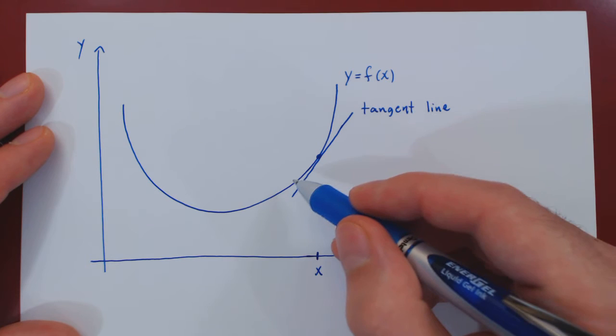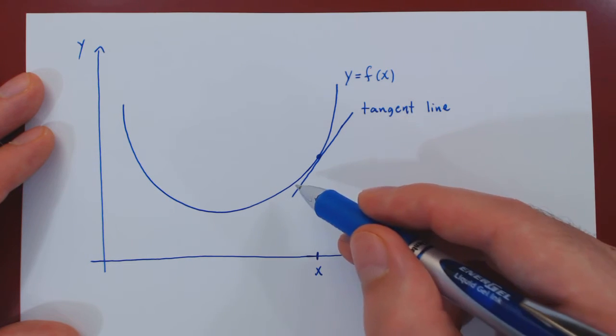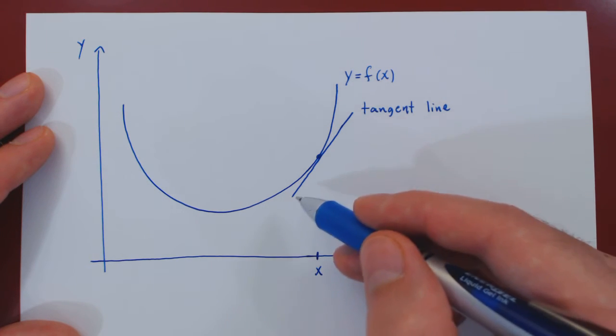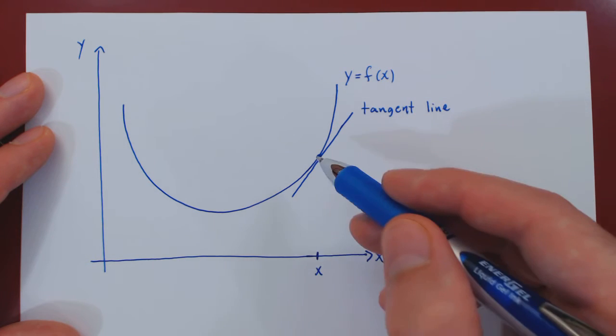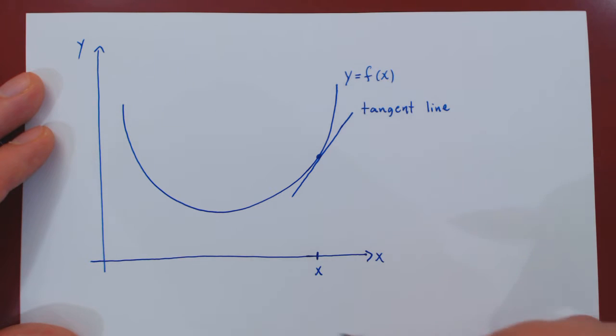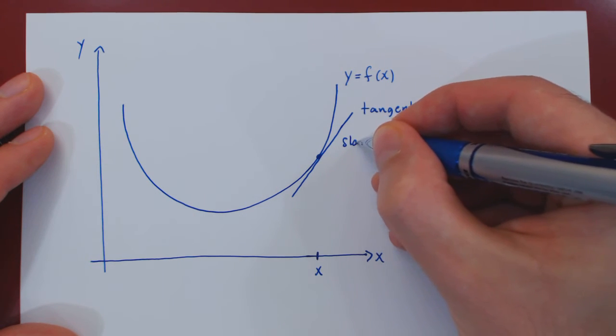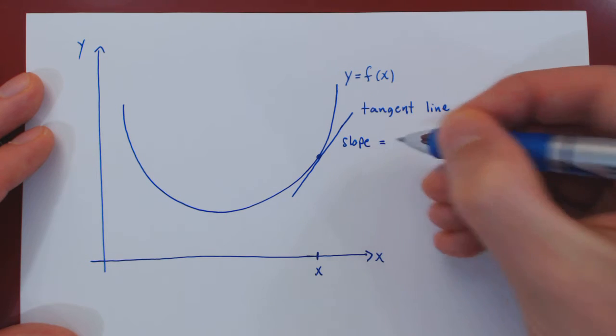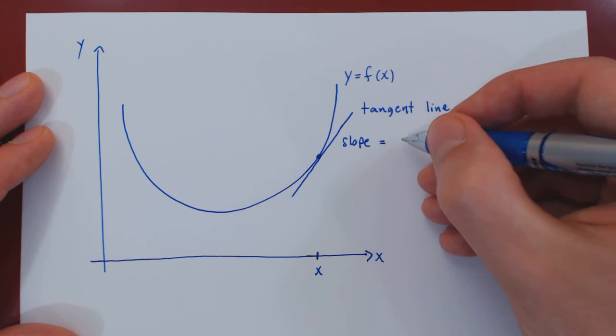And as I've said, if the curve is smooth enough, this line is unique. And while we now have a line that we can associate with the curve at this point, this is a line now so it naturally has a slope. The slope of this line is what we call the derivative of the function.